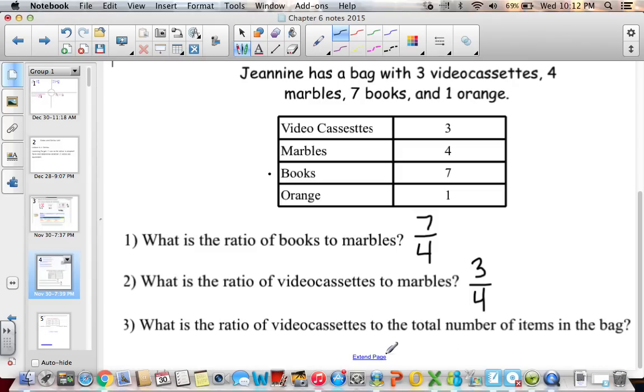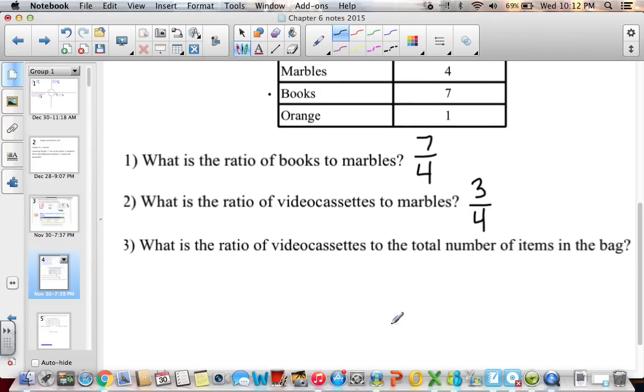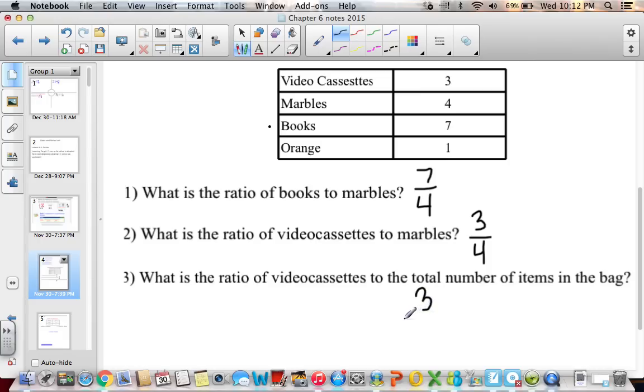The ratio of video cassettes to the total number of items in the bag. So video cassettes is 3, the total number of items. 3 plus 4 is 7, plus 7 is 14, plus 1 is 15. So that tells me that 3 items are video cassettes, and there's 15 total number of items in the bag. So notice that this time I'm comparing video cassettes to the total number. So this time I'm including the video cassettes in the denominator. Here I have video cassettes to marbles, and the video cassettes are not included in here. So here I can say 3 out of 15 are video cassettes. Here I would say there's 3 video cassettes to 4 marbles in the bag.